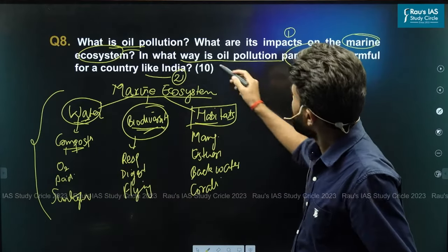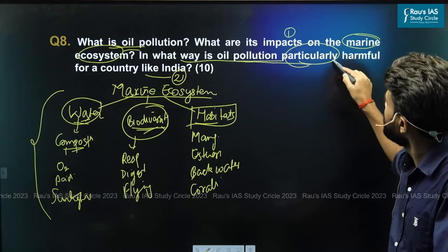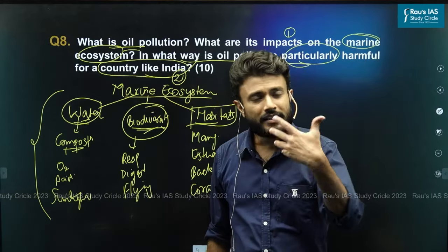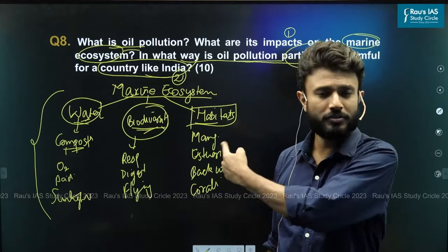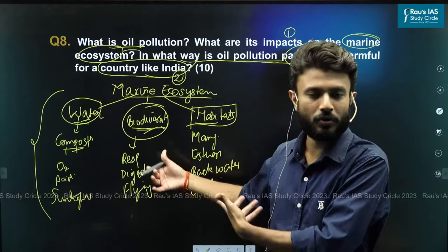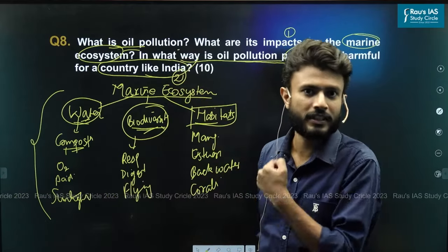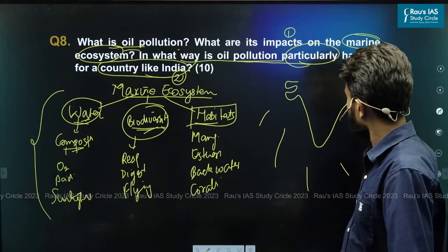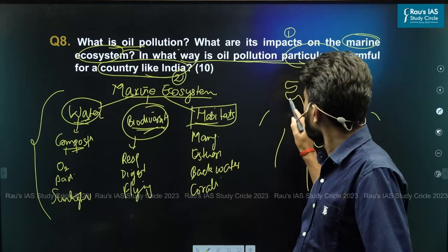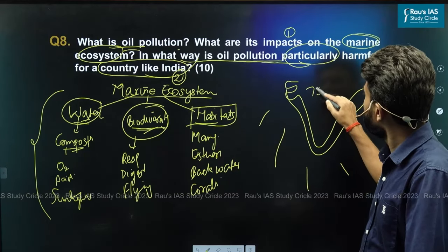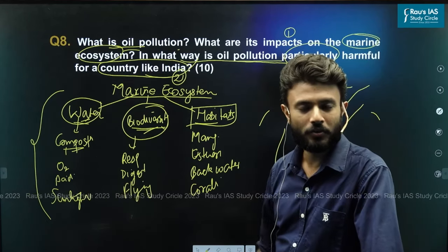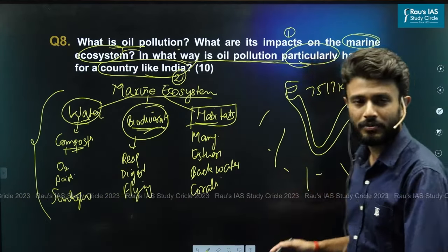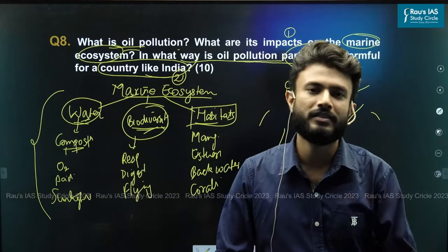Coming to the second part — in what way is oil pollution particularly harmful for a country like India? Think about what characteristics make India particularly vulnerable. The first and foremost point is India's long coastline of around 7,517 kilometers. Because India is so exposed to the marine environment, any oil spill in the region will affect the country detrimentally.